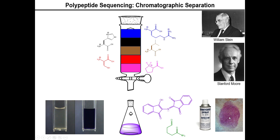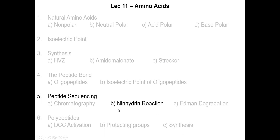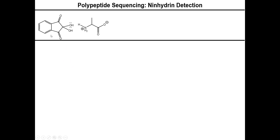Let me show you how that reaction actually happens from the point of view of a mechanism. The story starts with a proton exchange — we have that oxygen getting protonated. Once that happens, the other oxygen that did not get protonated has electrons come back down to form an additional carbonyl at the expense of that water leaving group, which comes off. So now you have this reagent, which is technically an activated carbonyl.